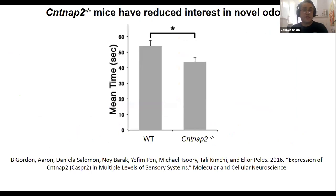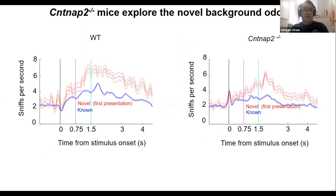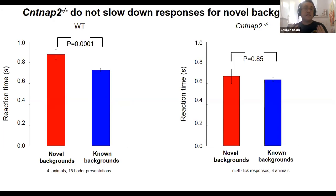Another possibility is reduced interest in odors leading to less exploration. However, in the head-fixed setup, when a novel odor is presented, both wild-type and CNTNAP2 mice increase sniff rate similarly — exploration seems unaffected. What is affected is that wild-type mice slow their reaction time when challenged with a novel background, but CNTNAP2 mice do not. We believe this computation requires time, and CNTNAP2 mice cannot engage in it.